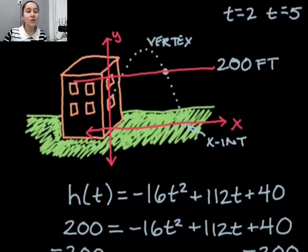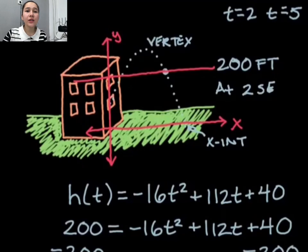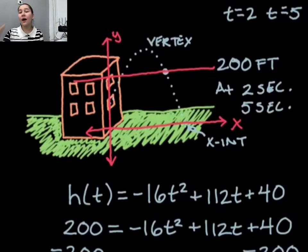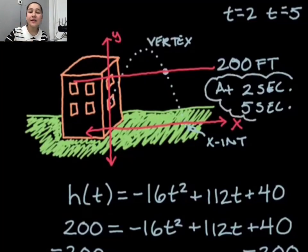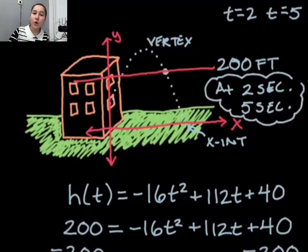So our final answer for these problems is that the ball reaches a height of 200 feet at two different times. Let me switch my pen color here. It reaches this height at two different times: at two seconds, meaning two seconds after the ball was thrown, and again at five seconds, five seconds after the ball was thrown. And those two times are our answers.